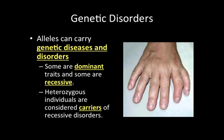Any allele can carry genetic diseases and disorders. Alleles in your body may or may not carry certain genetic disorders. Some are dominant traits and some are recessive traits. Individuals that are heterozygous are considered carriers — one dominant, one recessive — you're considered a carrier of that particular trait. These alleles can be deadly, they can cause deformities in the body, or they may not cause much problem at all. It all depends on what allele it is and what changes have been made to it in order to make it a genetic disorder.